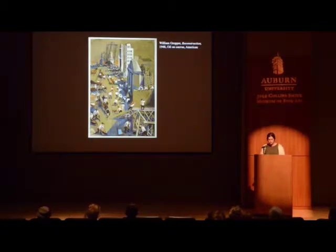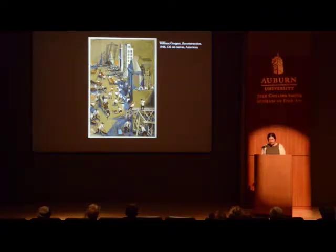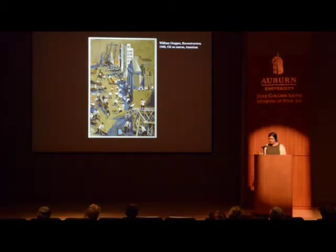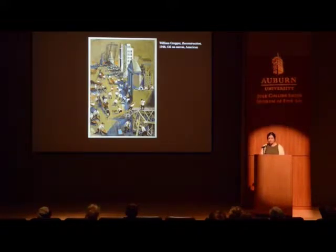As a young artist, Gropper studied under George Bellows and Robert Henry, both Ashcan painters who employed a realism in their depictions of New York City life. Reconstruction reflects a color palette of gritty, dirty, neutral colors, which may reflect some of his Ashcan influence.